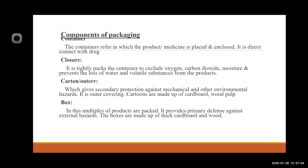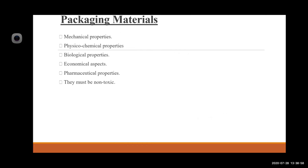The components of packaging include: the container, in which the product or medicine is placed and enclosed in direct contact with the drug. The closure tightly packs the container to exclude oxygen, carbon dioxide, and moisture, and prevents loss of water and volatile substances. Cotton or outer covering gives secondary protection against mechanical and other environmental hazards. Cartons are made of cardboard and wood; in these, multiples of products are packed providing primary defense against external hazards.